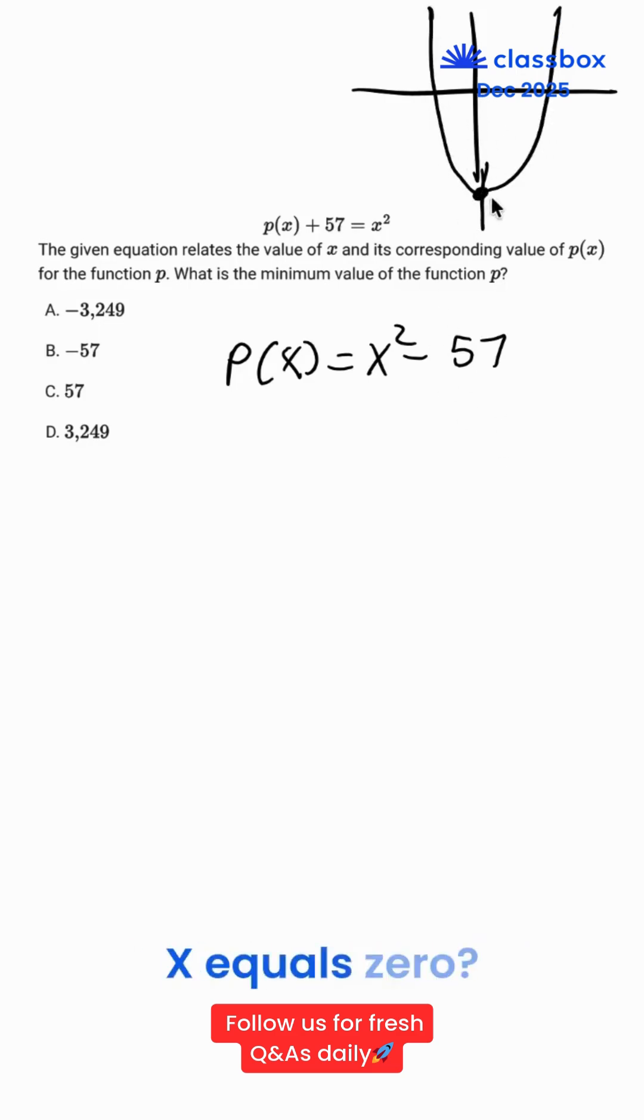And why did I put its vertex at x equals 0? Well, that's because if we recall, x equals negative b over 2a, which is the value of the x-coordinate of the vertex, and there is no b value here, so our vertex x-coordinate would be 0.